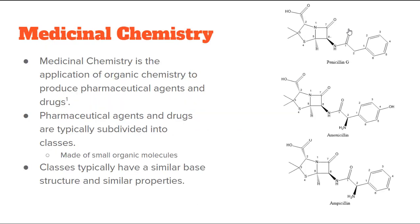Medicinal chemistry is the application of organic chemistry to produce pharmaceutical agents and drugs. Basically, we're taking the concepts learned in organic chemistry — synthesizing molecules — and figuring out how that applies to medicine and biology to create medicines that treat diseases. Pharmaceutical agents and drugs are divided into different classes, made of small and similar organic molecules.